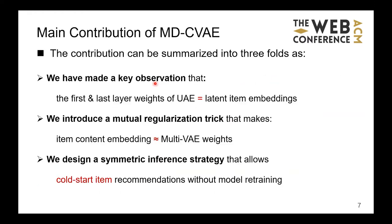To achieve this purpose, we propose a Mutually Regularized Dual Collaborative Variational Encoder, or MDCVE for short, for recommender systems. Our contributions are threefold. First, we made a key observation that the first and last layers of the UAE model can actually be viewed as latent item embeddings, so we can fuse item content information to support recommendations. Second, we introduce a mutual regularization strategy that tightly couples the UAE weights with item content embeddings. Third, we designed a symmetric inference strategy such that cold-start items can be directly recommended without a model retraining process.